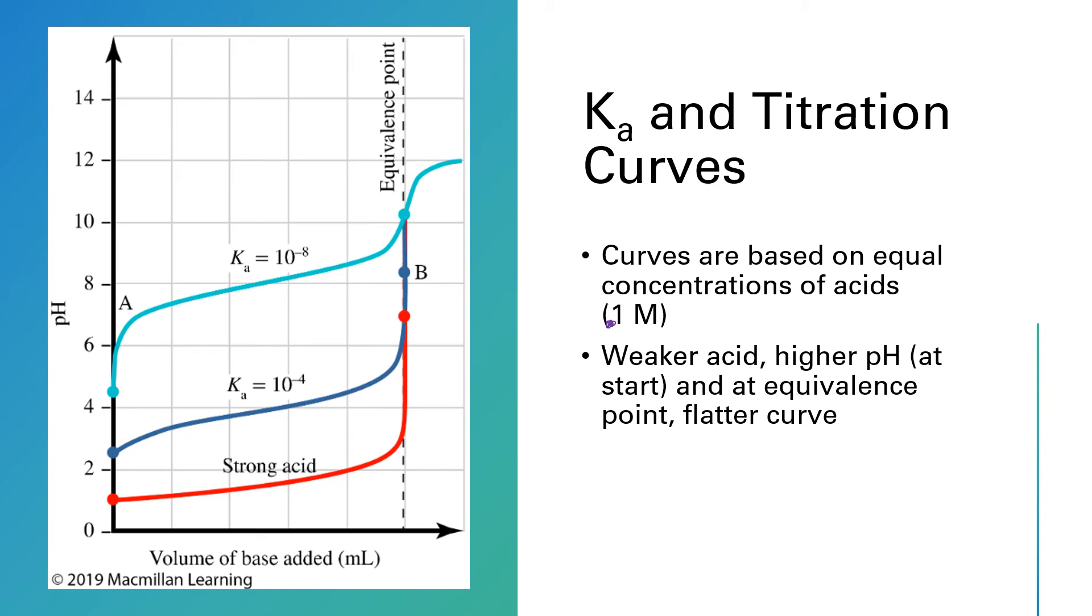And also notice that the smaller the Ka, the weaker the acid, the more basic the equivalence point is. So the strong acid had an equivalence point at 7. The acid with the 10 to the minus 4 Ka has an equivalence point that's a little over 8. And then the Ka value of 10 to the minus 8 is actually a little bit over 10 for the pH. So the shape of these curves can tell us a little bit about the Ka of the acid or vice versa.